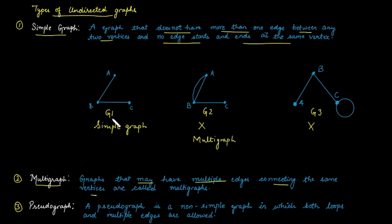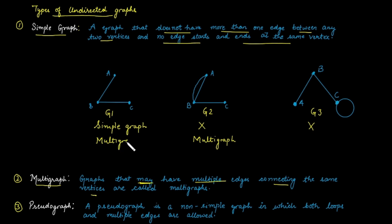What about graph G1? The answer is yes, G1 is a multigraph. The reason is that the definition says it may have multiple edges. So if multiple edges are not present, it is still categorized as a multigraph. What about graph G3? The answer is no — it is not a multigraph because self-loops are not allowed in a multigraph.